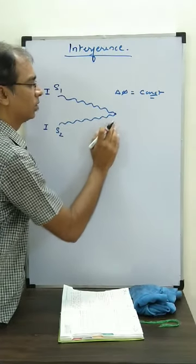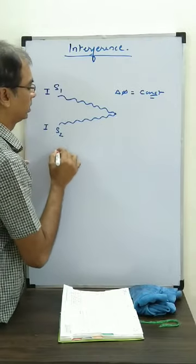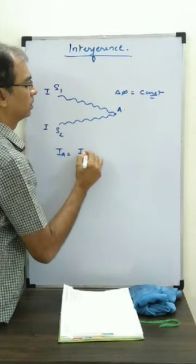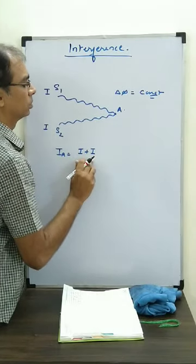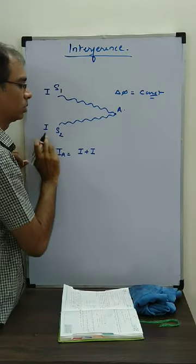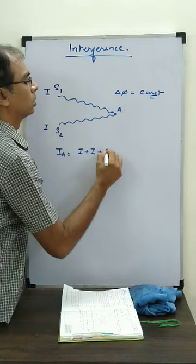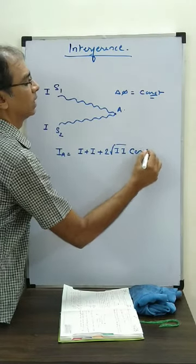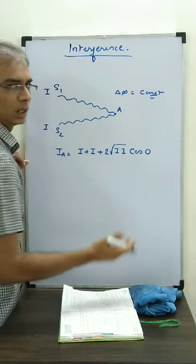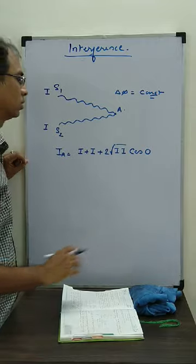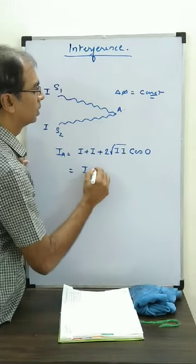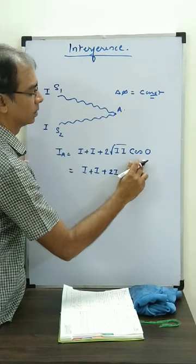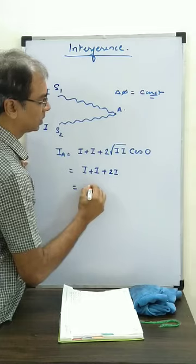So what is going to be the intensity of the constructive interference? Let us see. I resultant, suppose this is point A, then intensity at A is I, that is I1 plus I2, but both are I only. I1 plus I2 plus 2 root over I1 I2 cos phi. Now we are saying they are in phase, so I am taking phi as 0, or you can take it as 2 pi, 4 pi, 6 pi. What is coming? I plus I plus 2 root over I squared, that means 2I, and cos 0 is 1. So the maximum intensity we are getting is 4I.